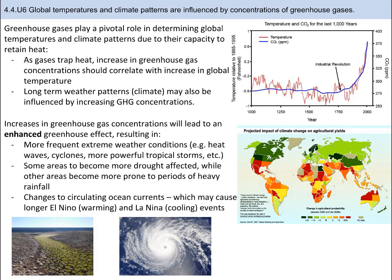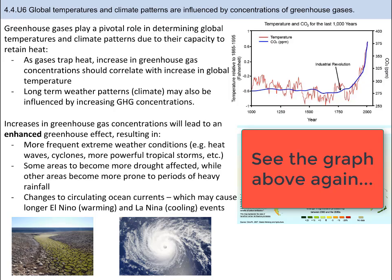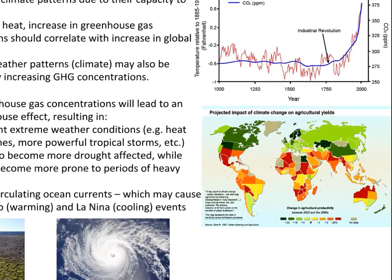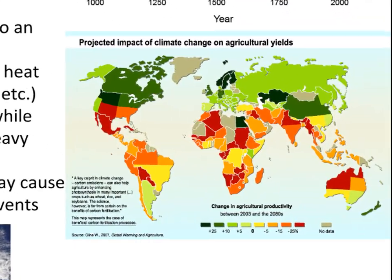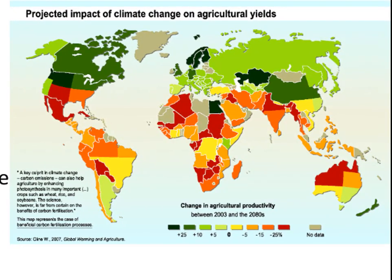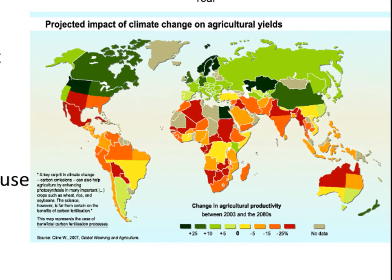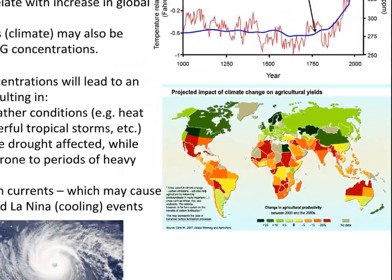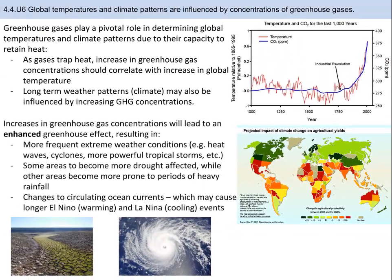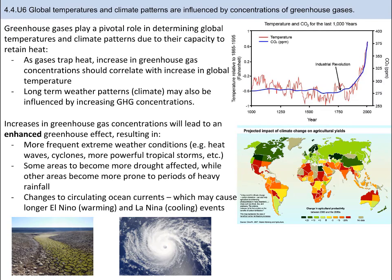Greenhouse gases play a pivotal role in determining global temperatures and climate patterns due to their capacity to retain heat. As these gases trap heat, increases in greenhouse gas concentrations should correlate with an increase in global temperature. Long-term climate patterns may also be influenced by greenhouse gas concentrations. Scientists predict that increases in greenhouse gas concentrations will lead to an enhanced greenhouse effect, resulting in more frequent extreme weather conditions — things like heat waves, cyclones, and more powerful tropical storms. Some areas are going to be more drought-affected, while other areas are going to be more prone to periods of heavy rainfall. There are also going to be changes to circulating ocean currents, which may cause longer El Niños and La Niñas.